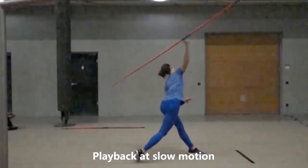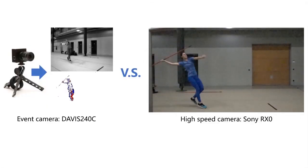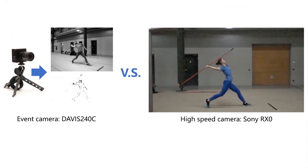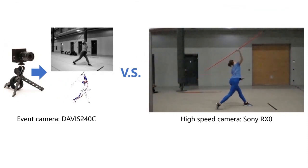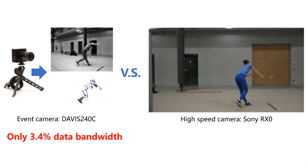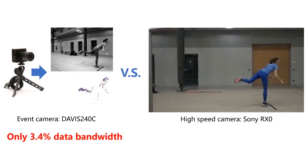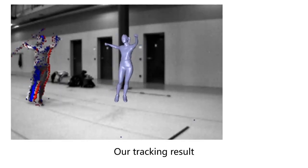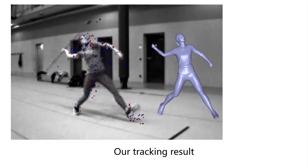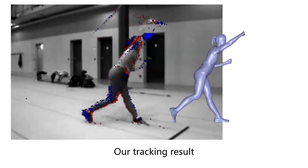Previously, this was only possible with high-speed cameras. In this paper, we leveraged the biology-inspired concept of an event camera that asynchronously measures the intensity changes at extremely high temporal resolution, resulting in a novel algorithm that is 30 times more data efficient than conventional methods. Our method can capture high-speed human motion at a temporal resolution of 1000 frames per second.